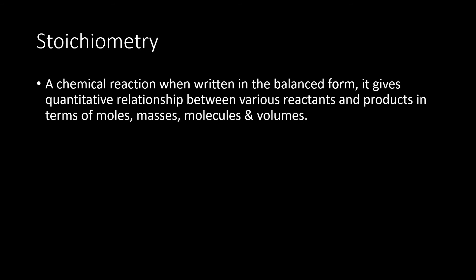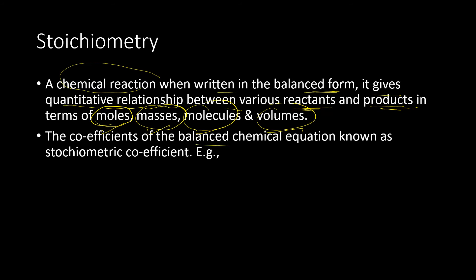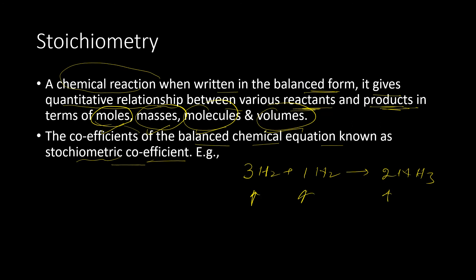So stoichiometry means: a chemical reaction when written in balanced form gives a quantitative relationship between various reactants and products, as we have seen in the previous examples, in terms of moles, masses, molecules, and volumes. The coefficients of a balanced chemical equation are known as stoichiometric coefficients — for example, in 3H2 + N2 → 2NH3, the coefficients 3, 1, and 2 are the stoichiometric coefficients.